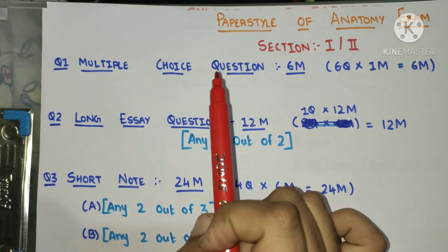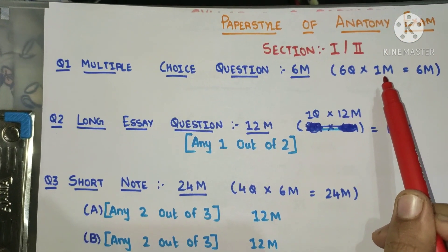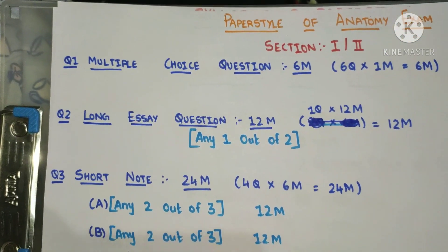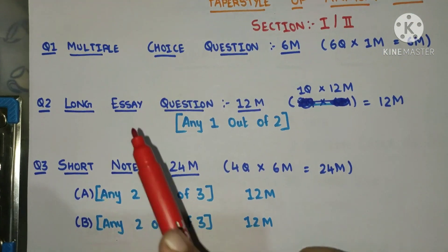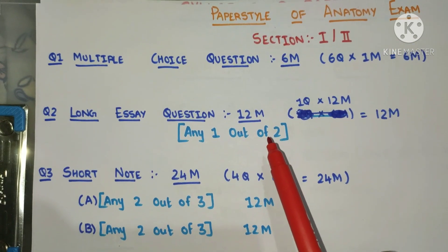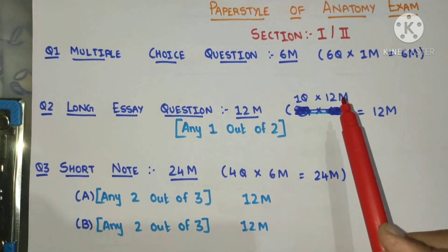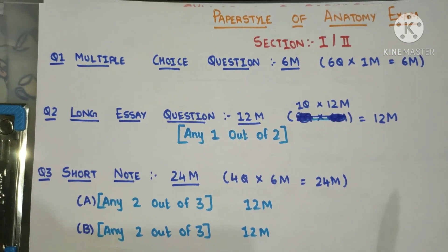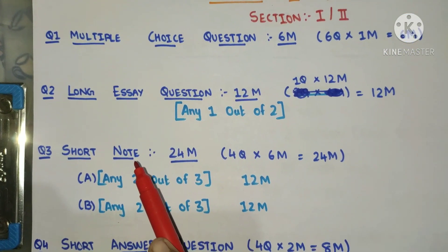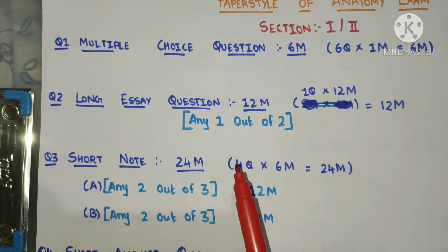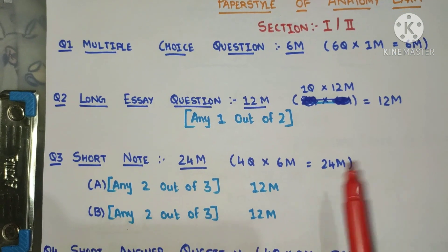Question one will be multiple choice questions, which will be of six marks — there will be six questions, each carrying one mark. Question two will be a long essay question in which you have to attempt any one out of two, carrying 12 marks. Question three will be short notes, carrying 24 marks — you have to attempt four questions, each carrying six marks.